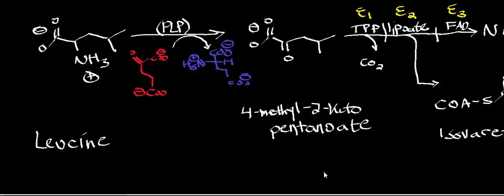When we catabolized valine, we ultimately got it down to propionyl-CoA, and we ended up converting that to succinyl-CoA. What we're going to find out in this video is we're actually going to catabolize leucine down to HMG-CoA. If that molecule doesn't sound familiar, go back and watch the ketone body biosynthesis and catabolism playlist, or the cholesterol biosynthesis video.